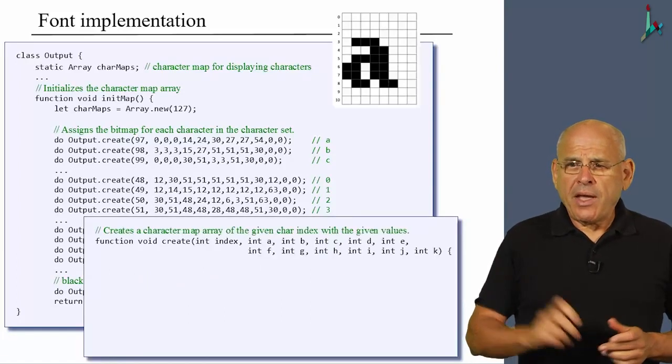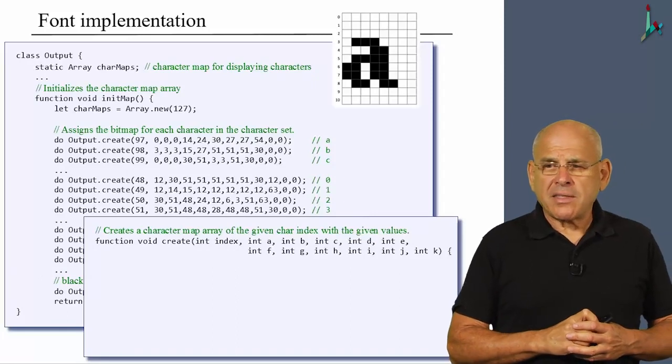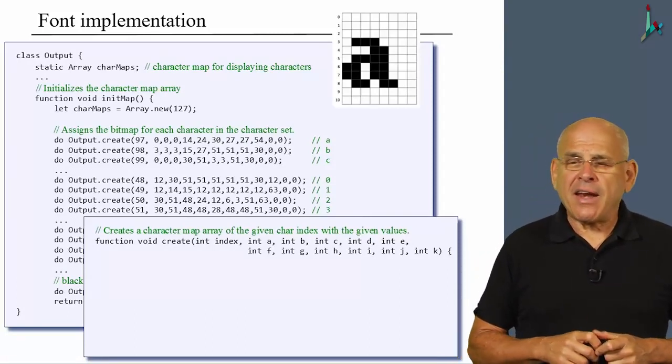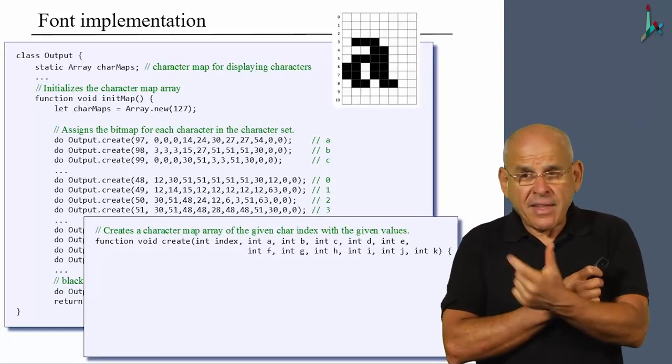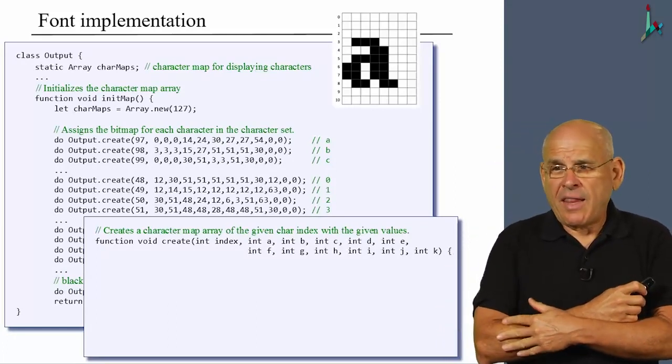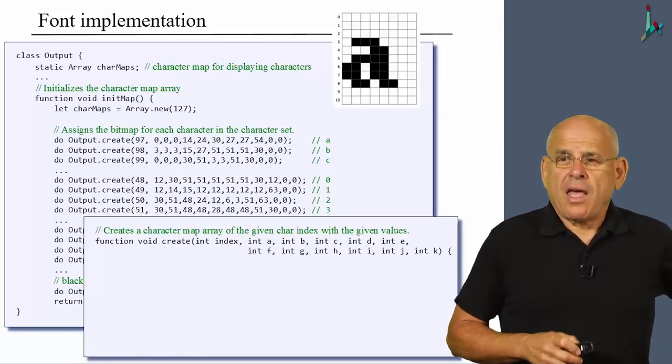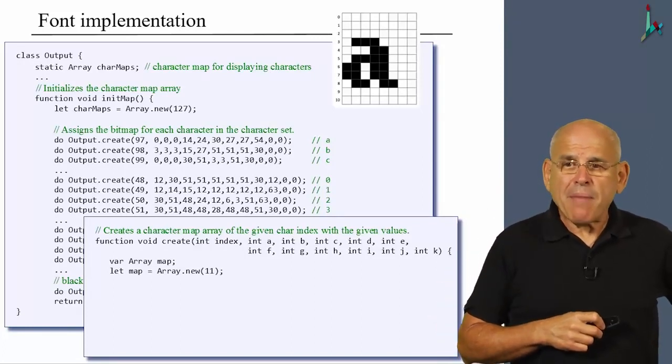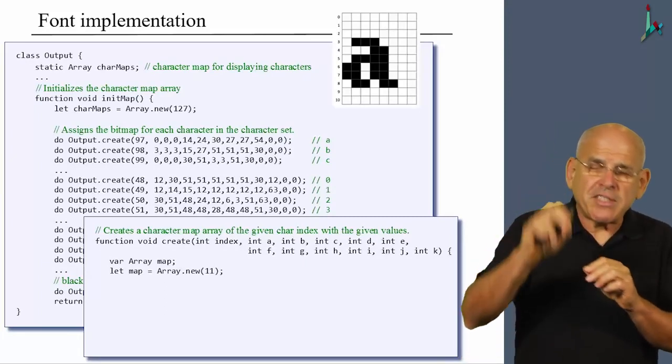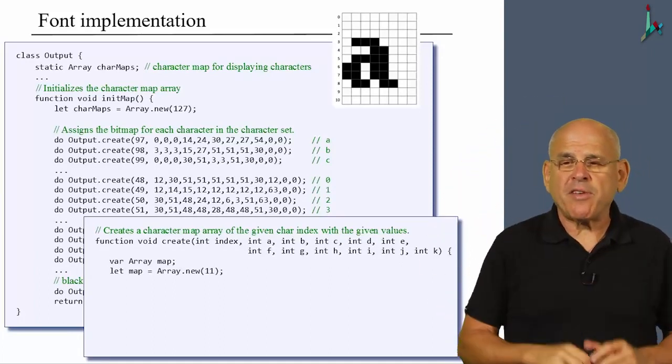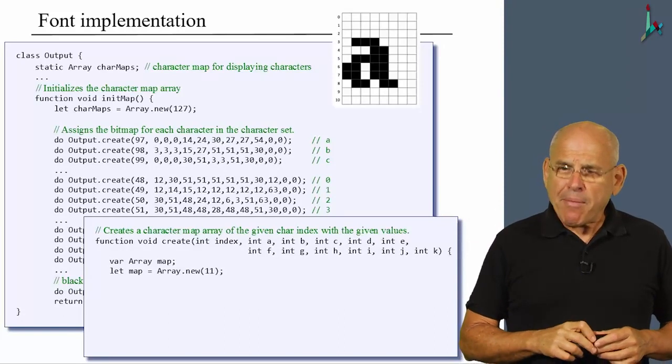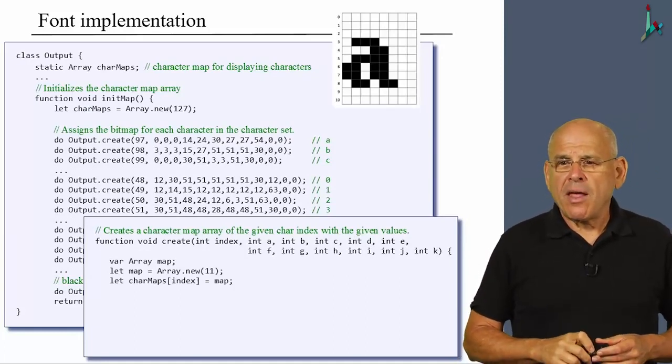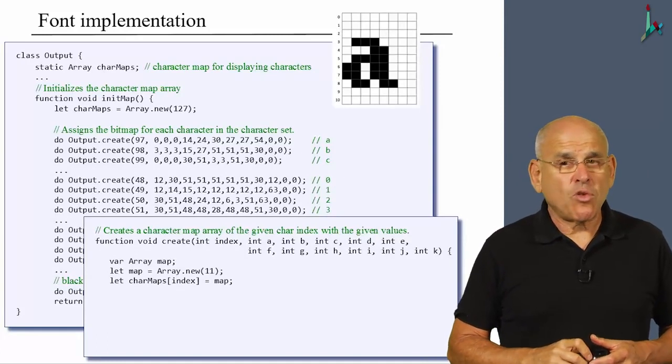And what remains to be described is this create function that we use here. And here it is. This is the create function. It takes 12 parameters. The first parameter is the index of the array. And the index of the array, by the way, also happens to be the ASCII code. And then come the 11 numbers. So this function here defines yet another array called map. You know, this is the array of the actual letter. The previous array was the array that holds all the bitmaps. This is one specific bitmap. So we define an array called map and create it with 11 entries, one for every number in the character frame. And then we set charMaps index to map.